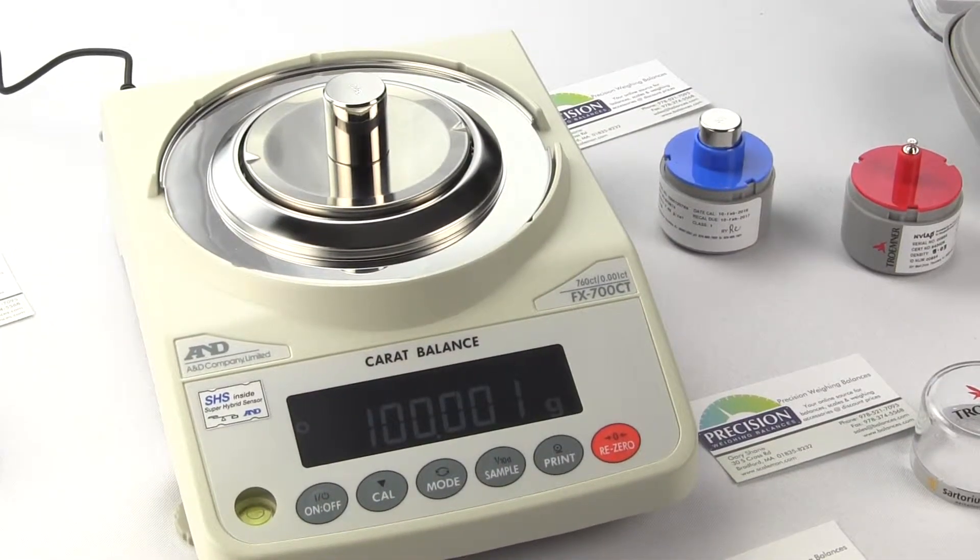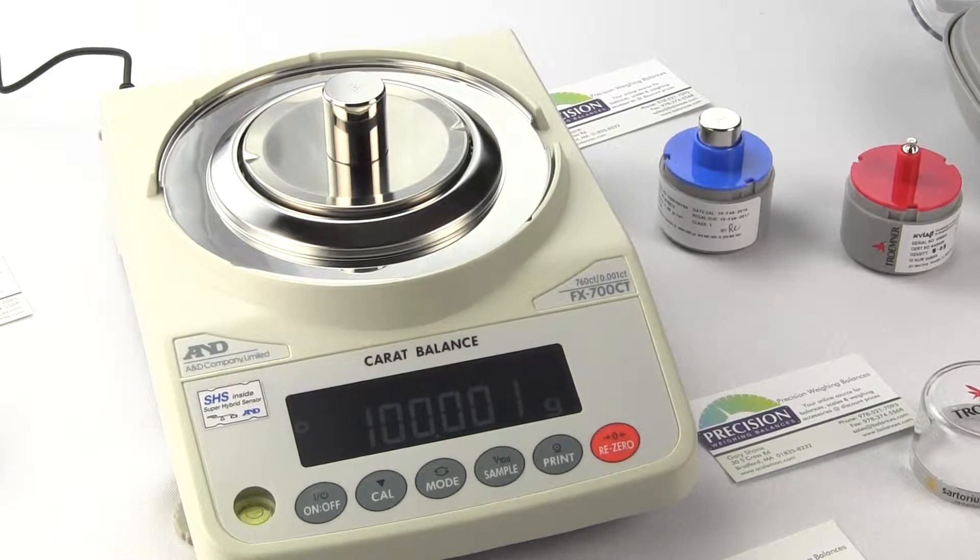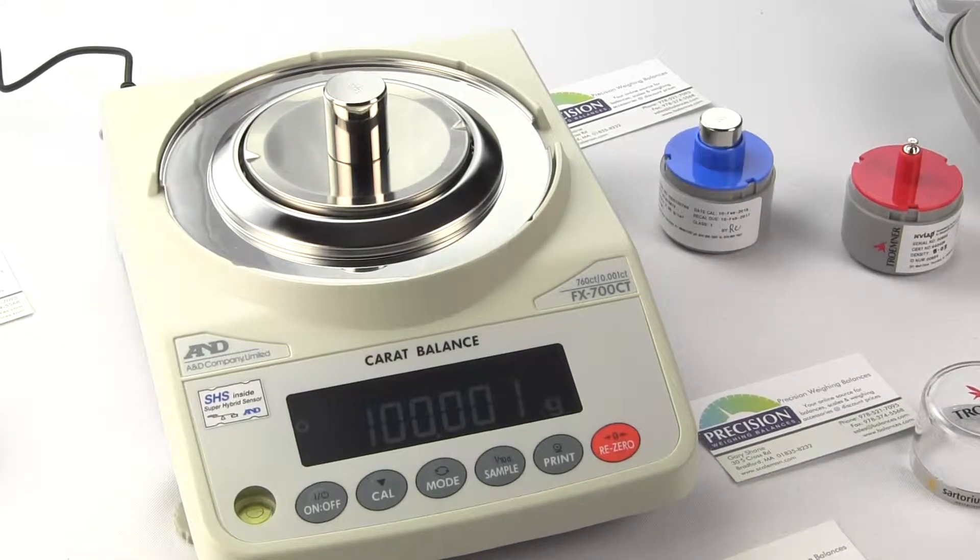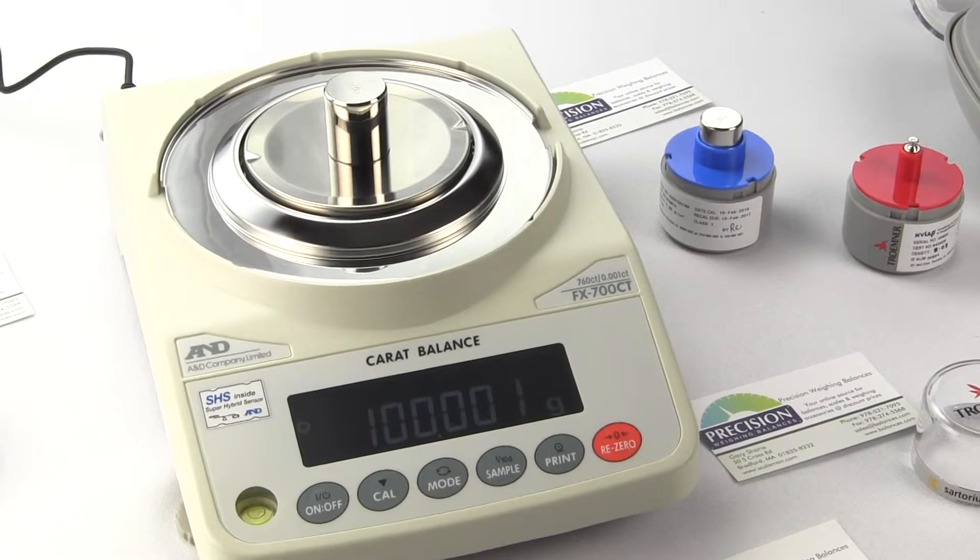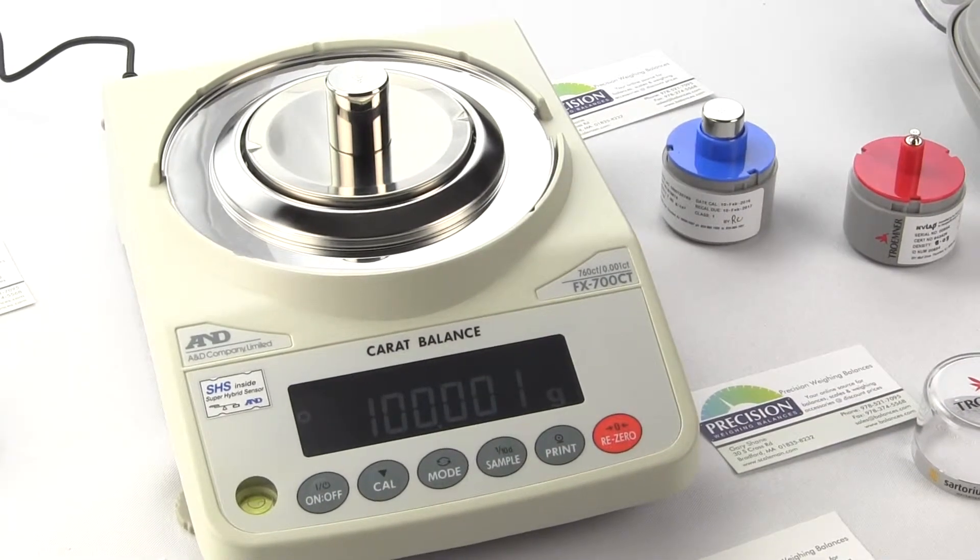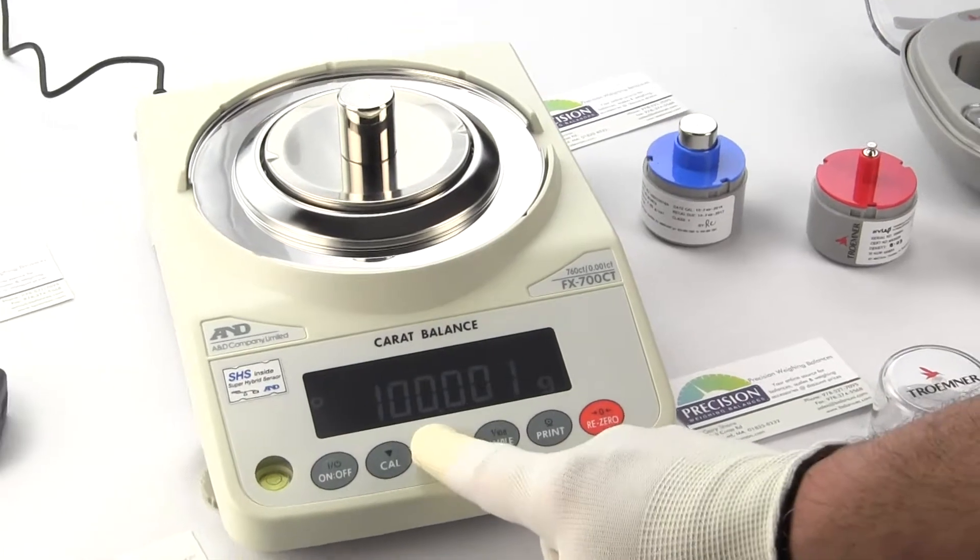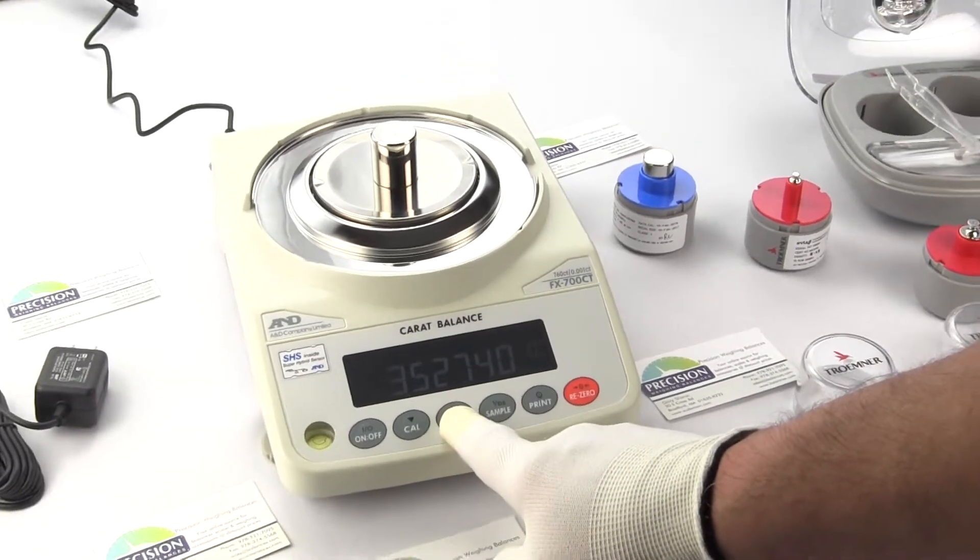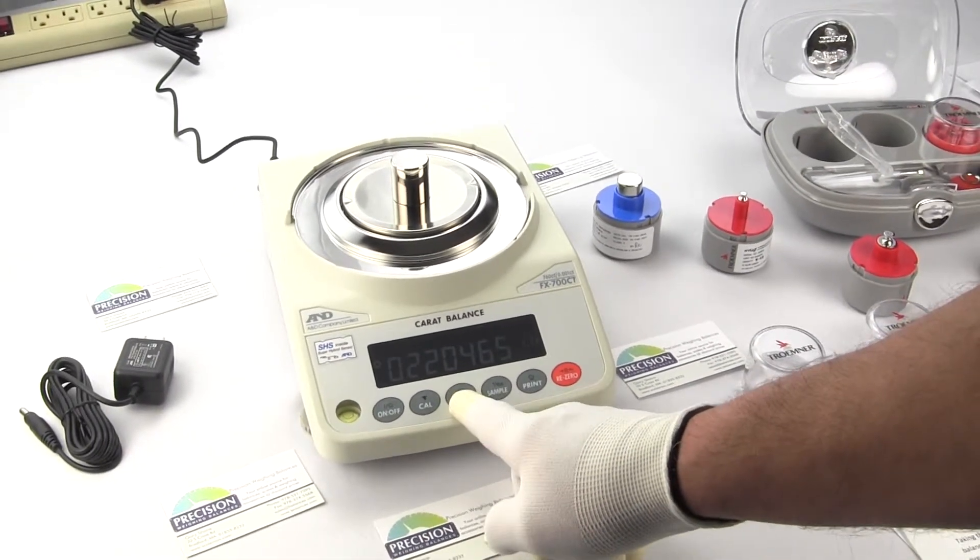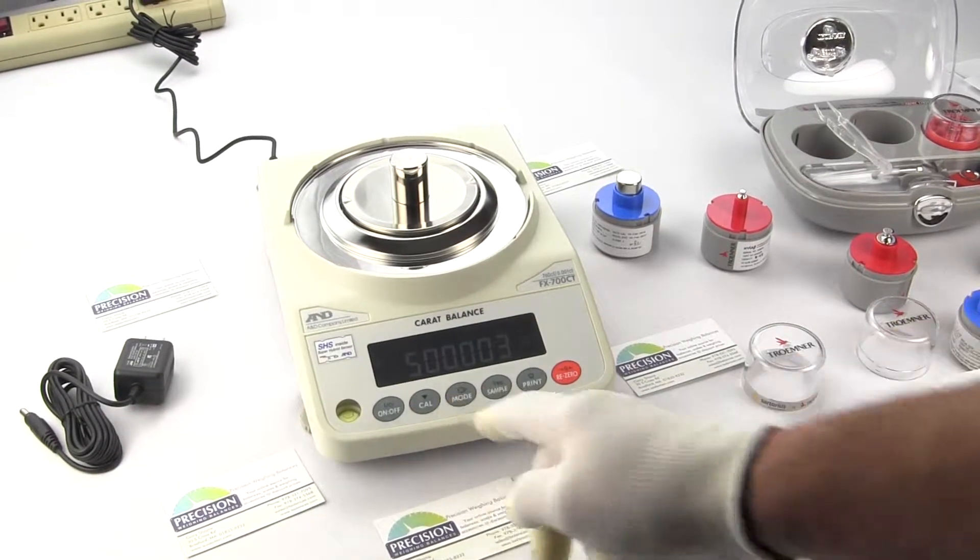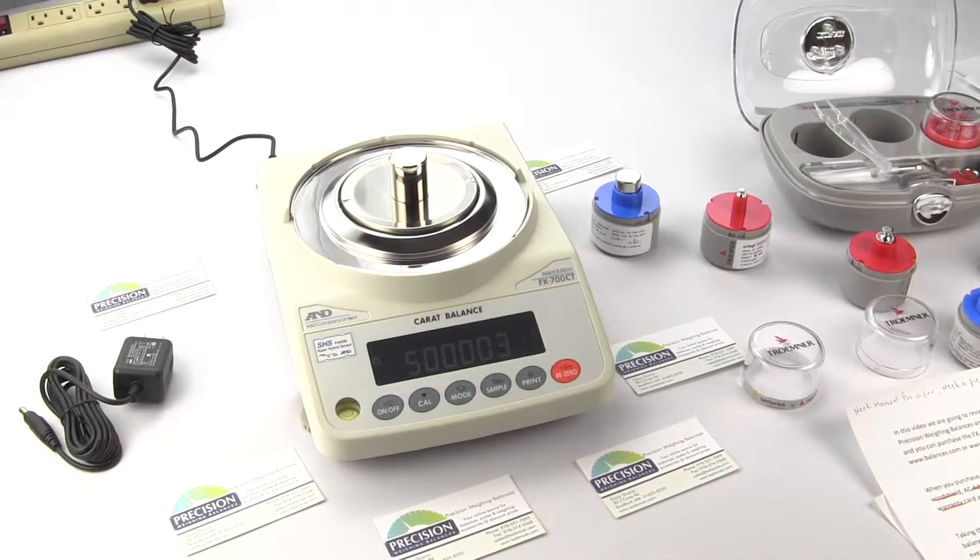If you are a jeweler and you're weighing lots of gems and precious stones you can weigh up to 700 carats with the FX700CT and the balance increments in 0.001 carat.